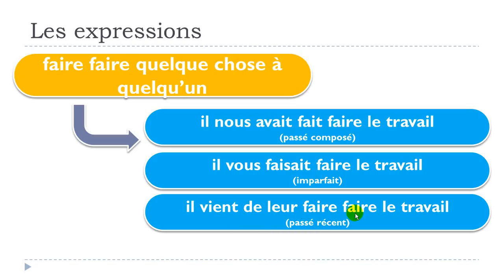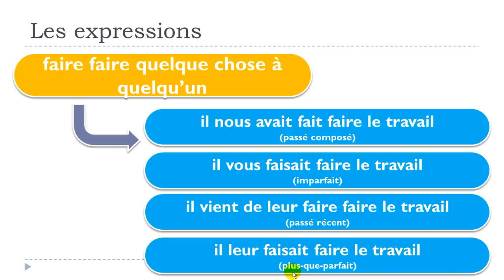Finally, for the plus-que-parfait with the third person plural — same pronoun for masculine and feminine — we get: 'il leur faisait faire le travail.' Let's recap: 'il nous avait fait faire le travail' — 'il vous faisait faire le travail' — 'il vient de leur faire faire le travail' — 'il leur faisait faire le travail.'